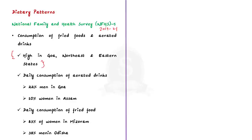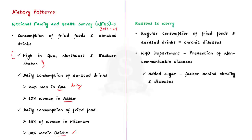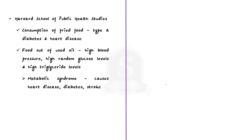According to the survey, over 22% of men drank aerated drinks daily in Goa and 10% of women did the same in Assam. In Mizoram, about 83% of women consumed fried foods daily while 38% of men did the same in Odisha. This is a worrying data because regular consumption of such foods is linked to chronic diseases. According to WHO's Department for the Prevention of Non-Communicable Diseases, consumption of added sugar is a major factor behind obesity and diabetes. Studies by the Harvard School of Public Health showed that consumption of fried foods leads to development of type 2 diabetes and heart disease.